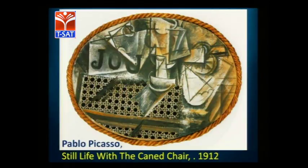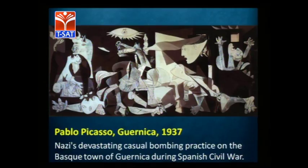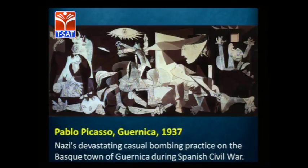Still Life with Chair Caning, painted in 1912, is the painting which led to the technique called collage and from which synthetic Cubism begins. When it comes to Cubism you have two phases: analytical Cubism and synthetic Cubism. Guernica is another popular painting by Picasso, painted in 1937. It is a mural painted as a response to the Nazi bombing of the city of Guernica during the Spanish Civil War.